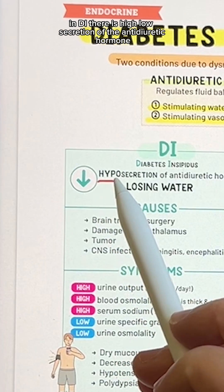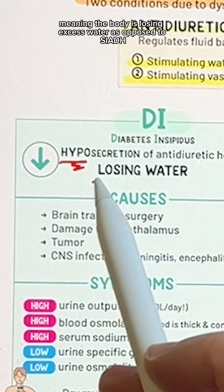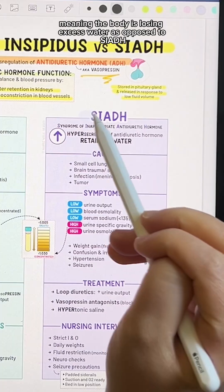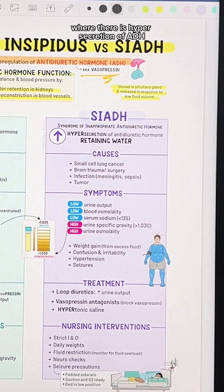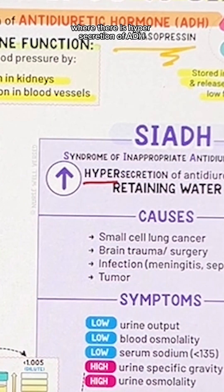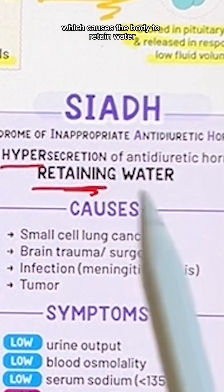In DI, there is hyposecretion of the antidiuretic hormone, meaning the body is losing excess water, as opposed to SIADH, where there is hyposecretion of ADH, which causes the body to retain water.